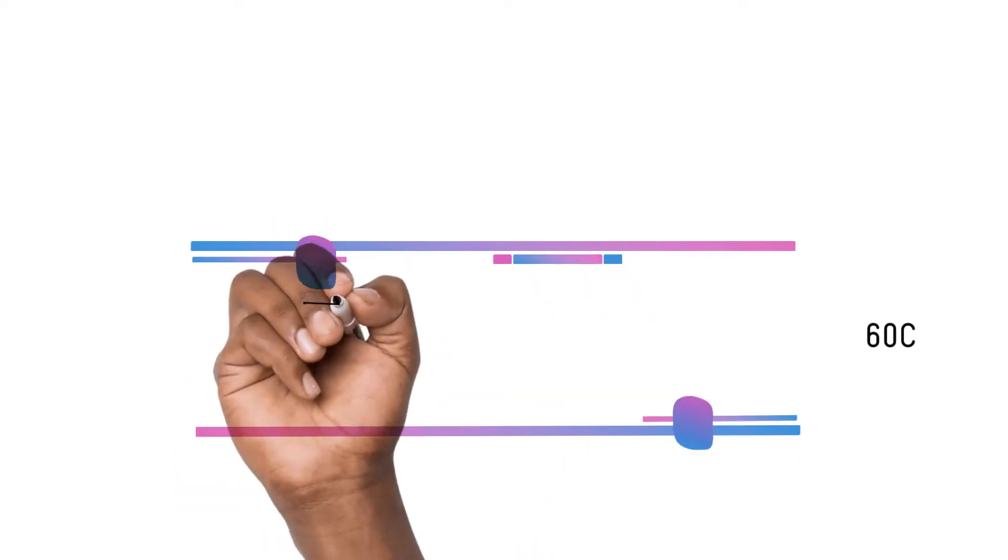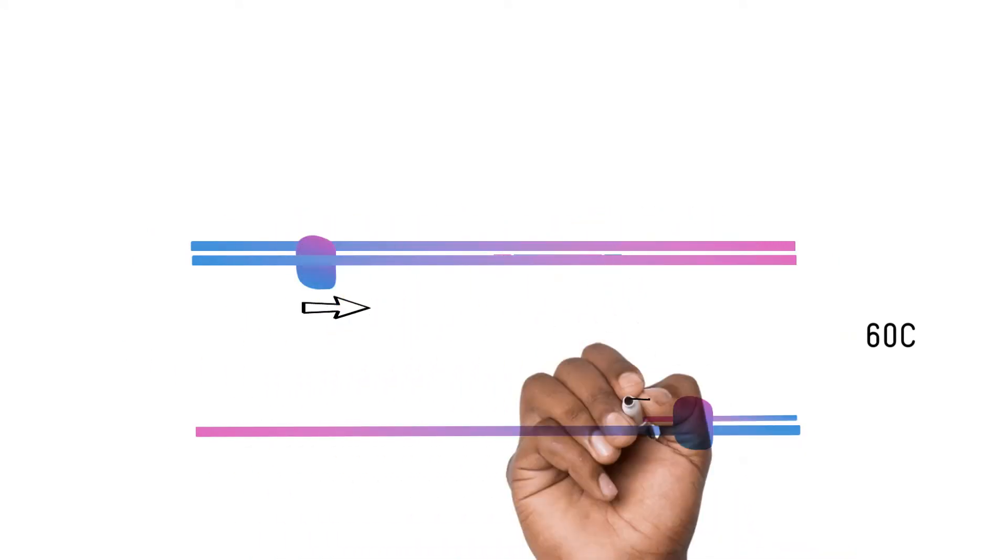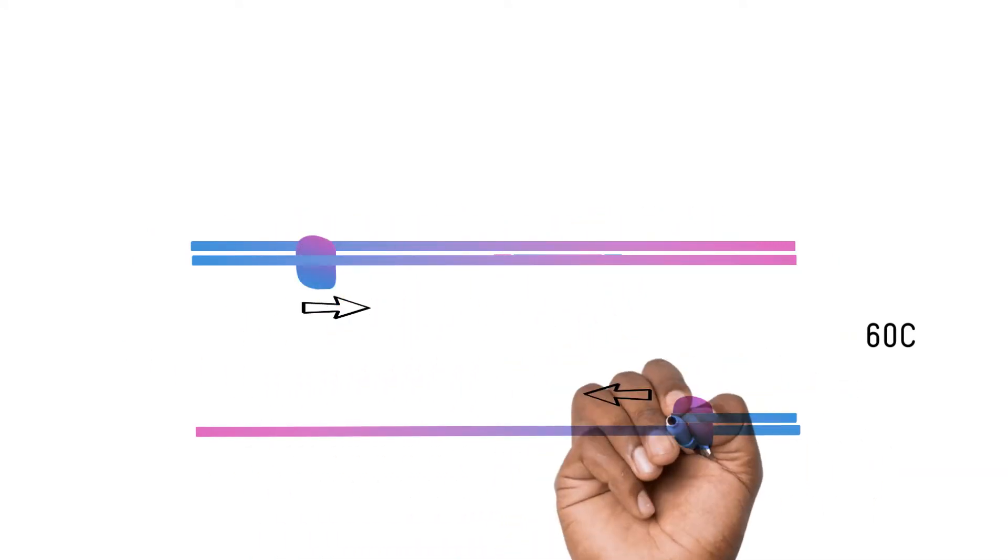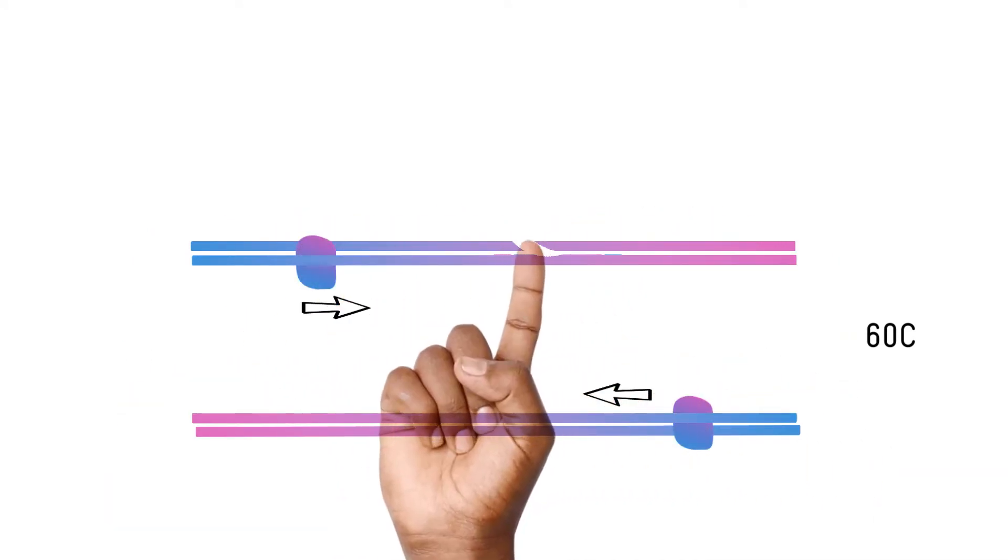This primer allows an enzyme to bind and duplicate the DNA strand. A second DNA tag called a probe gives off a colored signal when this duplication occurs.